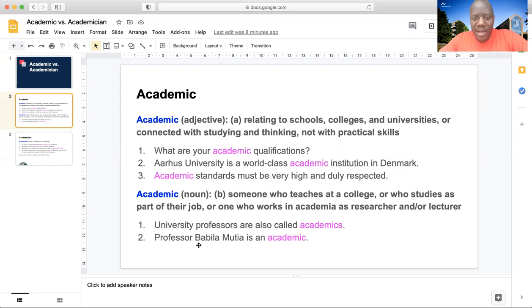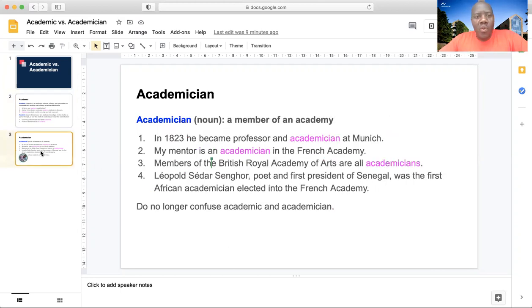Another example, Professor Babila Mutia is an academic at the University of Yaounde 1, specifically at Ecole Normal Superior de Yaounde. So, and now, who is an academician? An academician is a member of an academy, a member of a specific academy.